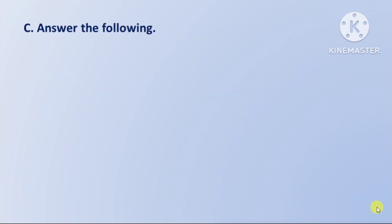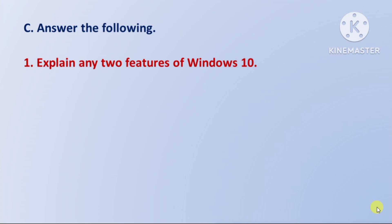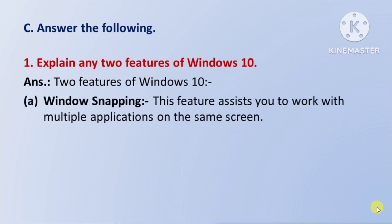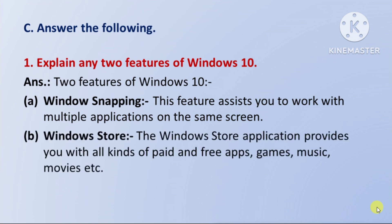Answer the following. First question: explain any two features of Windows 10. Answer: First, Windows Snapping — this feature assists you to work with multiple applications on the same screen. Second, Windows Store — the Windows Store application provides you with all kinds of paid and free apps, games, music, movies, etc.